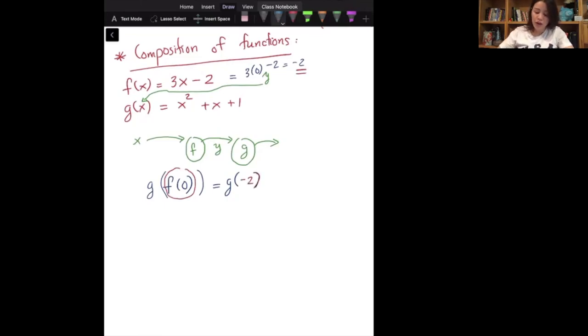So I would write g of all of that. So g of, well, f of zero now is negative two. And then we will take the negative two for the input of g function. So when I go back up to the g function, whenever I see an x, I replace with negative two. So I have negative two squared plus negative two plus one. So negative two squared, that's four minus two plus one. Four minus two is two plus one is three. So g of f of zero is equal to three.